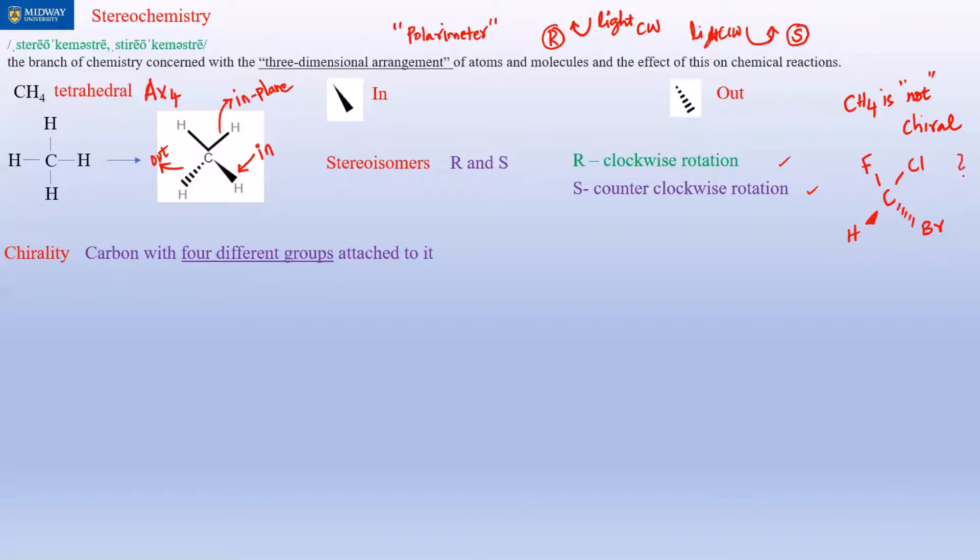Each carbon in methane has four identical groups, so it's not chiral. But what is chiral is a carbon with four different groups attached to it. Let's say you have a carbon with fluorine, chlorine, hydrogen, and bromine attached—those are four different groups. This carbon is a chiral carbon, and chirality is usually indicated by an asterisk.